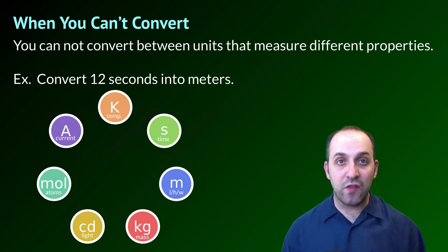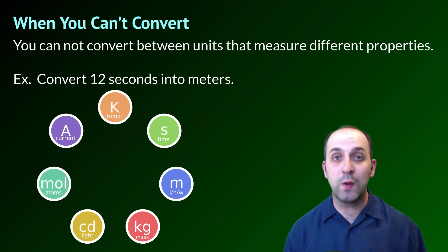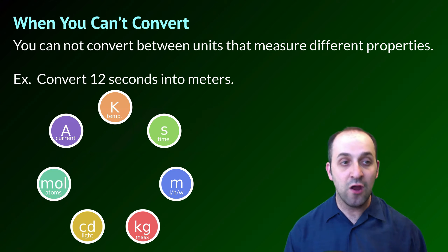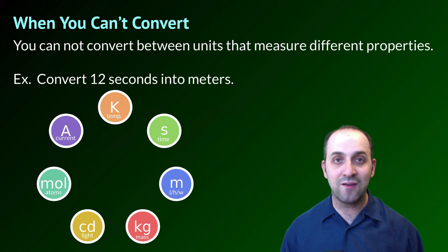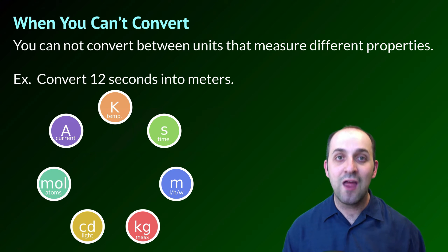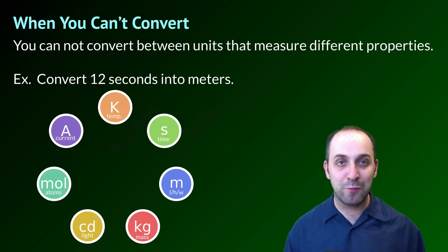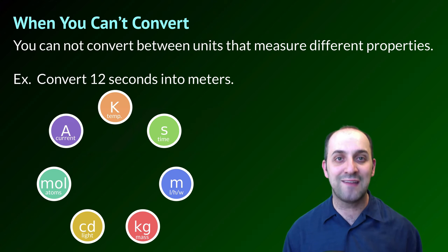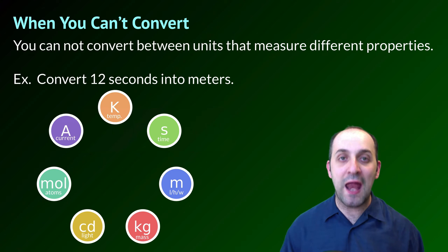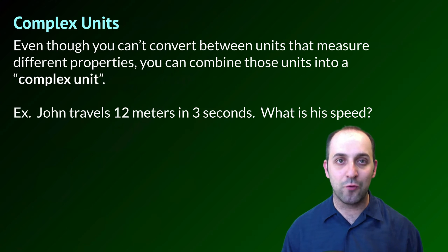We should take some time to talk about units that you can't convert between. You can't convert between units that measure different properties. So if you were asked to convert 12 seconds into meters, that's not going to work. Meters are a unit of physical dimensions and seconds is a unit of time. You cannot convert between any of the different base units — it's just not possible.